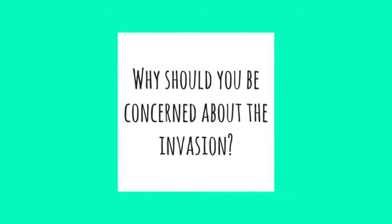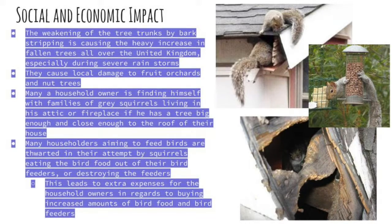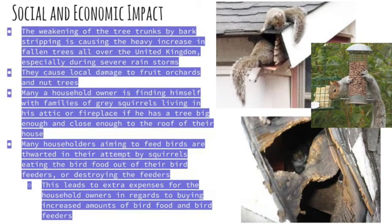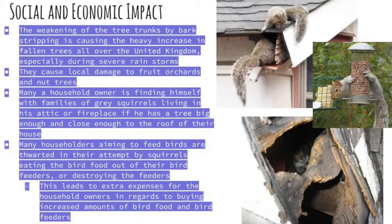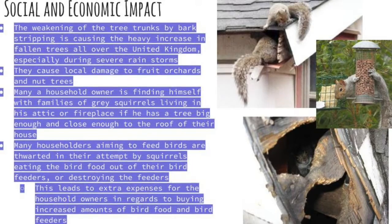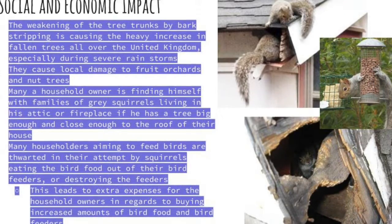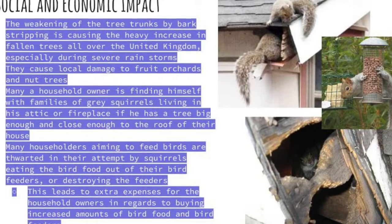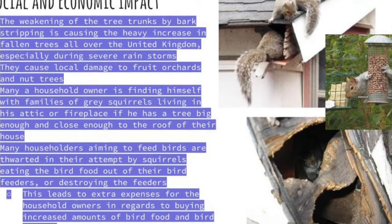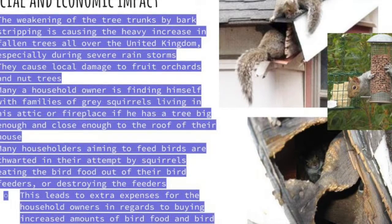Why should you be concerned about the invasion? Social and economic impact: the weakening of tree trunks by bark stripping is causing heavy increases in fallen trees all over the United Kingdom, especially during severe rainstorms. They cause local damage to fruit orchards and nut trees. Many household owners find families of gray squirrels living in their attic or fireplace. Many householders aiming to feed birds are thwarted by squirrels eating bird food from feeders or destroying the feeders, leading to extra expenses in buying increased amounts of bird food and bird feeders.